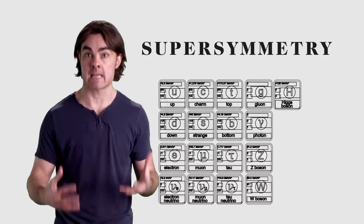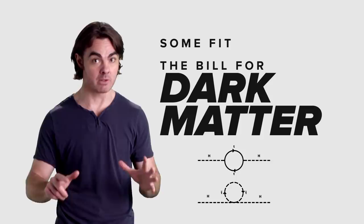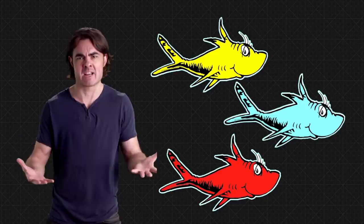Some of them fit the bill for dark matter. Sinking down into the depths of quantum field and string theory, you can find all sorts of strange fish: WIMPs, axions, neutralinos, some of which may actually exist, and some of them may be dark matter.